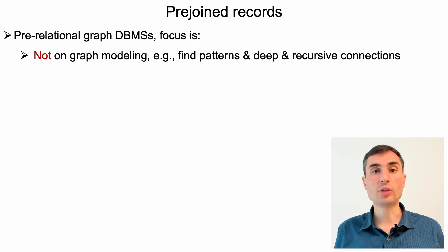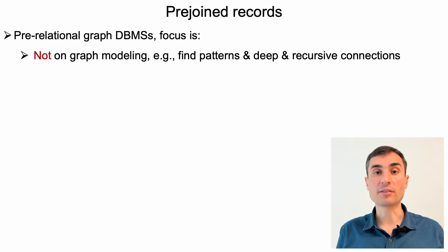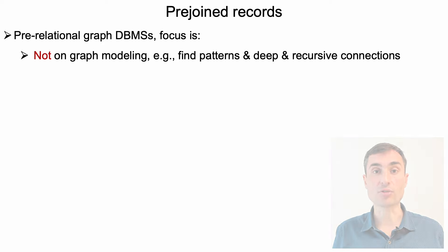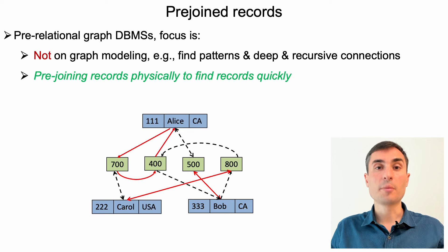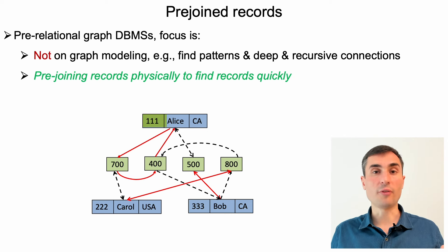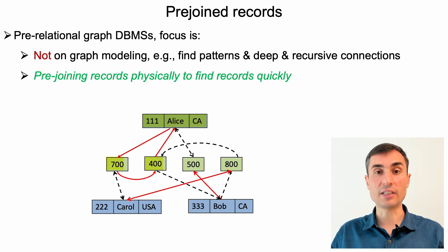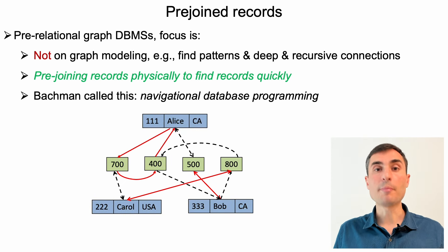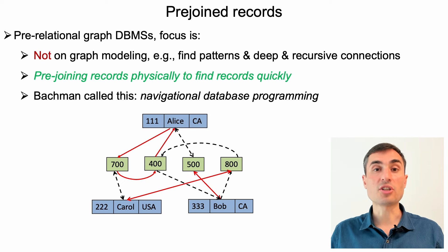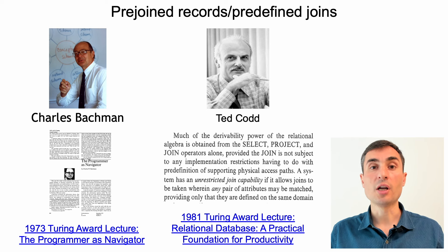Although both network and hierarchical databases adopt a graph-based model, graph-based modeling in these early systems was not really about the advantages we highlight today — such as entity-and-relationship-oriented modeling or finding recursive connections. Instead, it was about pre-joining your records with each other through explicit links so database programmers could navigate this graph of records and find records quickly. For example, you could fetch Alice's account record and from that access related e-transfer records, and from those access other receiving accounts. Bachman called this navigational database programming — a major invention at the time. He titled his Turing Award lecture 'Programmer as Navigator.'